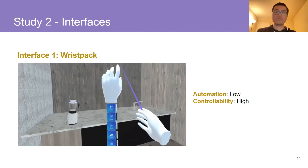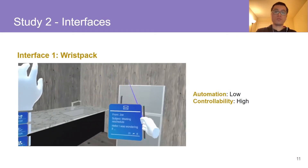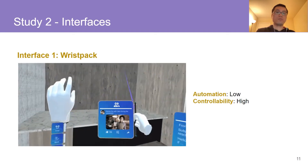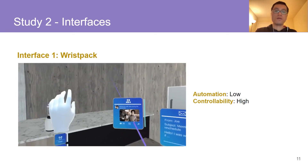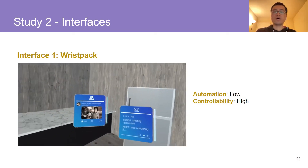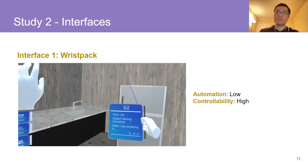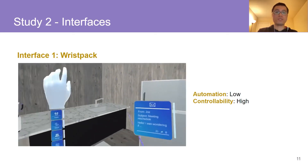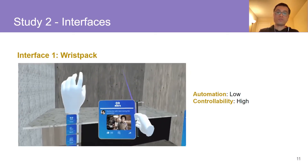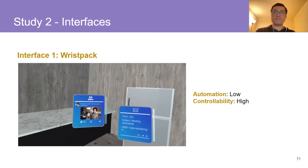Inspired by the design workshop solutions, we developed three interfaces with different levels of automation and controllability. First, Wrist Pack — after users enter a new space, all AR apps are automatically attached to the user's wrist. Users could open an app by grabbing it out from their wrist.